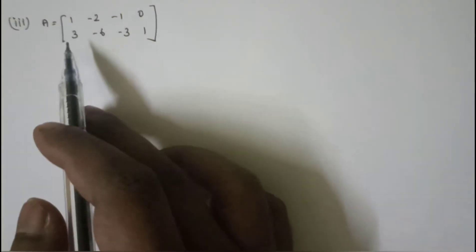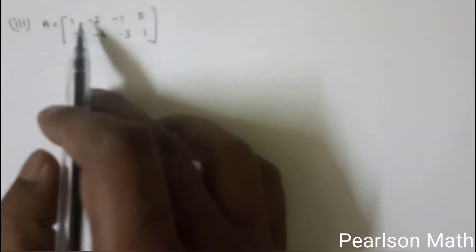Third sum: A is equal to [1, -2, -1, 0; 3, -6, -3, 1]. This is a matrix we need to find the rank of.